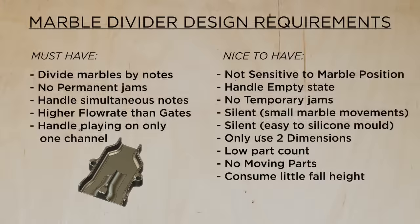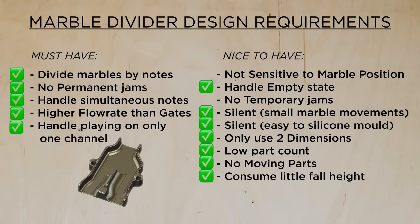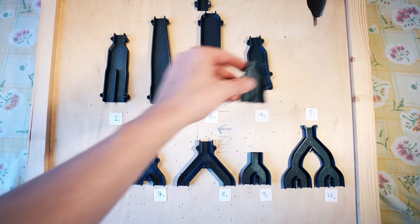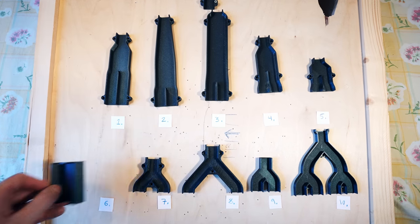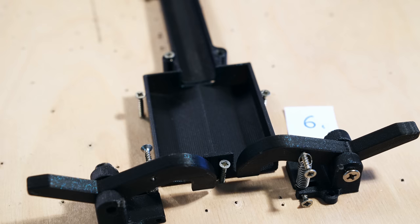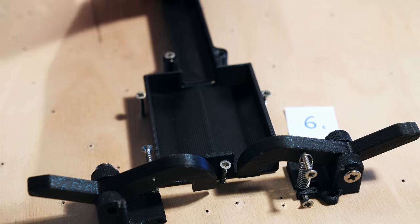Here's the full list of all our design requirements. Version 5 cleared all our must-have requirements, but it didn't clear the not-sensitive-to-marble-position nice-to-have requirement. So I wanted to try to make a design that would also fix this, so I made version 6.